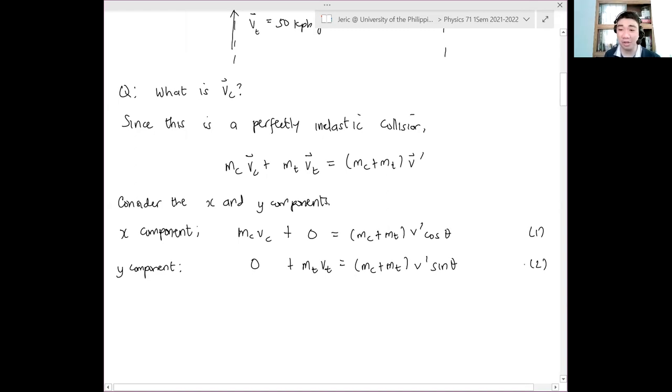Now, notice that v prime, we don't know v prime. The vc, we also don't know. But vt we know. The masses we know. Therefore, the only ones that we are not sure of is v prime. We do not know v prime and vc. And therefore, you have two unknowns. But you have two equations. And therefore, you can solve this uniquely. You can solve this.